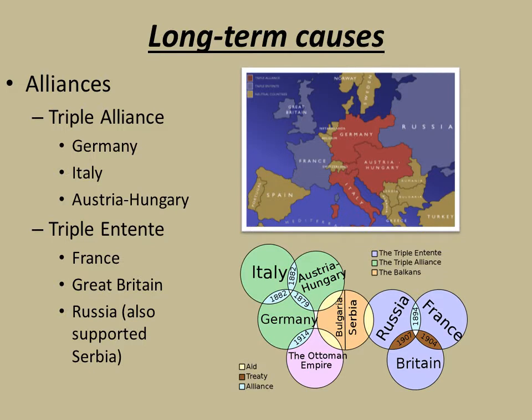Another long-term cause of World War I is the alliance system. One of the big alliances is the Triple Alliance, consisting of Germany, Italy, and Austria-Hungary — agreements made mostly in the late 1800s in the aftermath of German and Italian unification. They're shown on the map in red. The Triple Entente is the other major alliance, formed mostly in response to the Triple Alliance. Russia, France, and Britain saw the unification of central and southern European countries and formed their own alliance. The easiest way to remember which is which: 'Entente' is a French word, so the Triple Entente is the alliance that France was in.